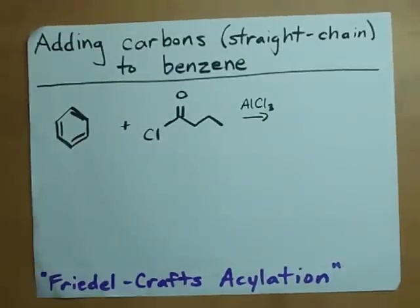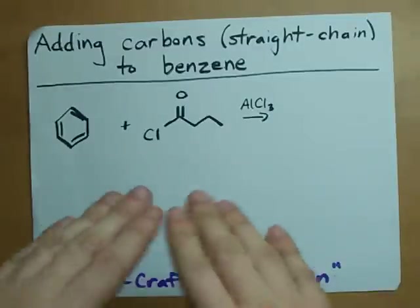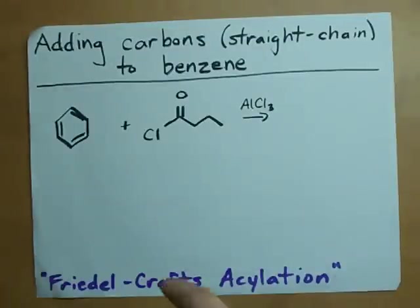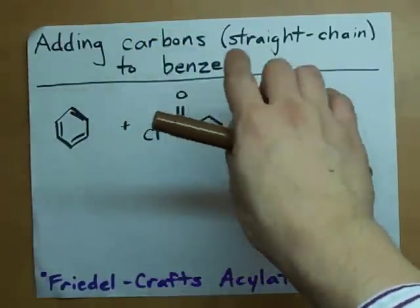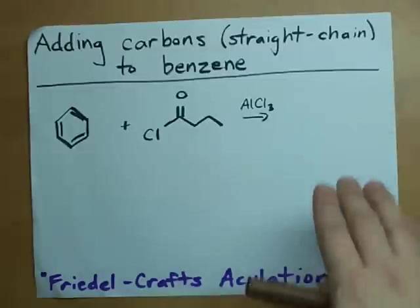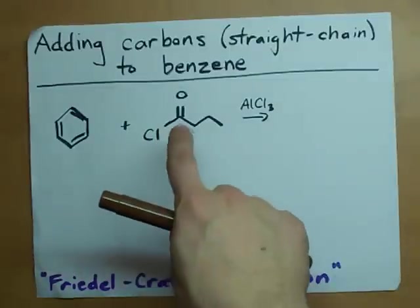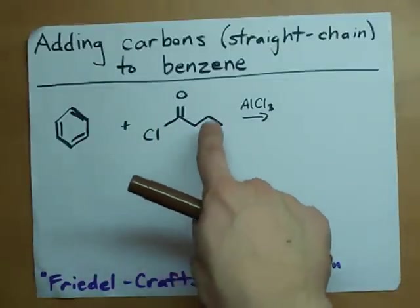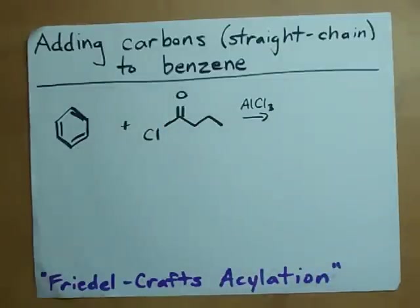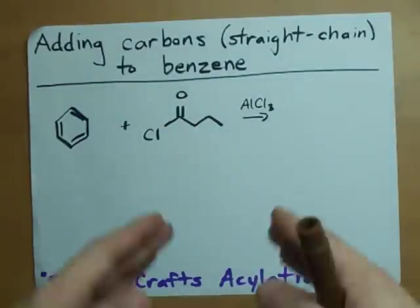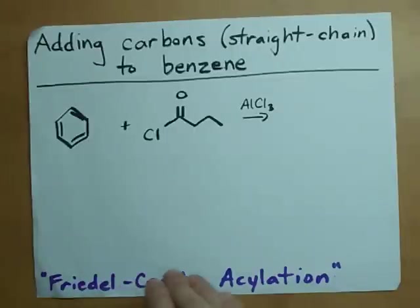Hey guys, I'm a big fan of Friedel-Crafts anything. Here I'm going to show you how you can add carbons — straight chain carbons, like carbon, carbon, carbon — to a benzene ring. The answer is Friedel-Crafts acylation.